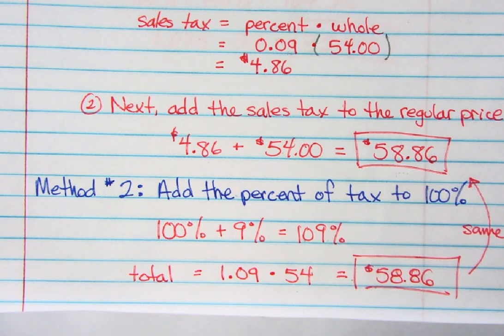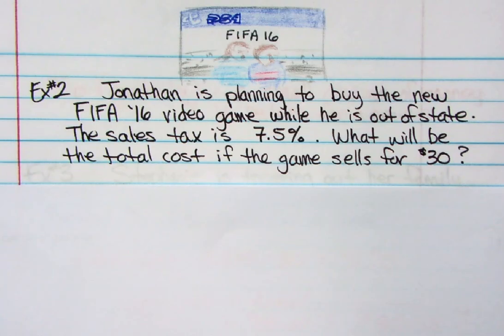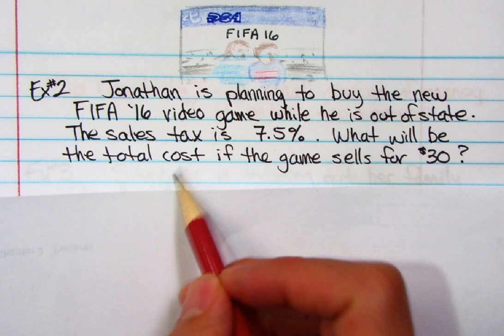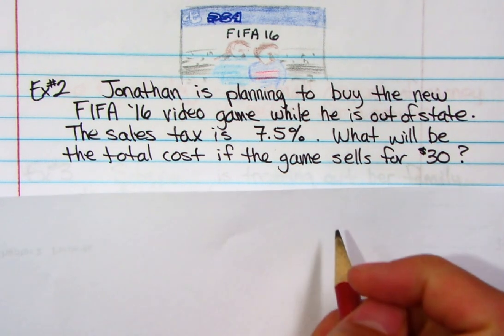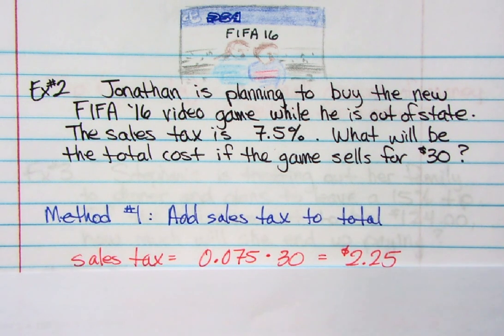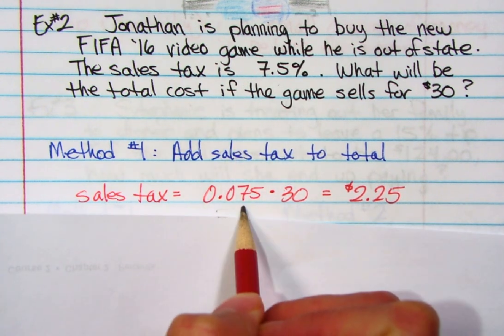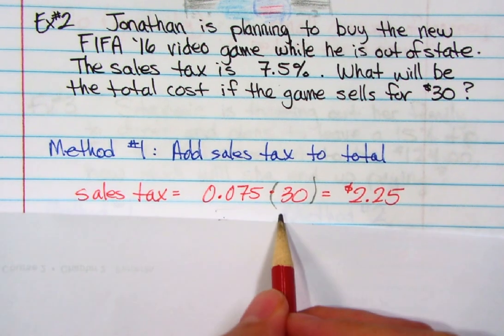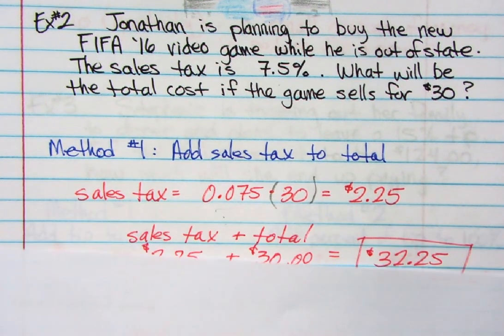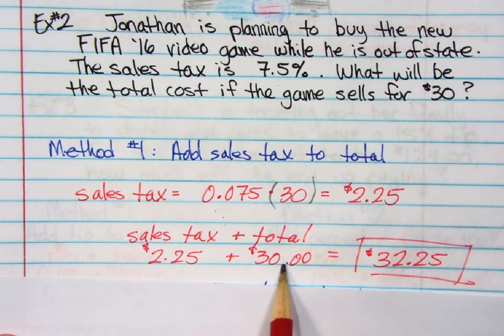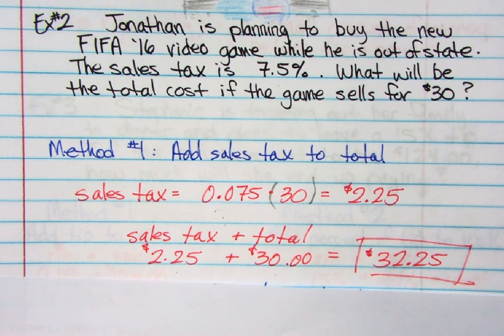Let's do a few more examples. Jonathan is planning to buy FIFA 2016 while traveling out of state. The sales tax in Nevada is 7.5%, which is a little cheaper than buying it in California. What will the total cost of the game be if it sells for $30? Method one: 7.5% becomes 0.075 as a decimal. Multiply 0.075 times $30 and you get $2.25 — that's the sales tax. Add it back to $30 and you end up paying $32.25.